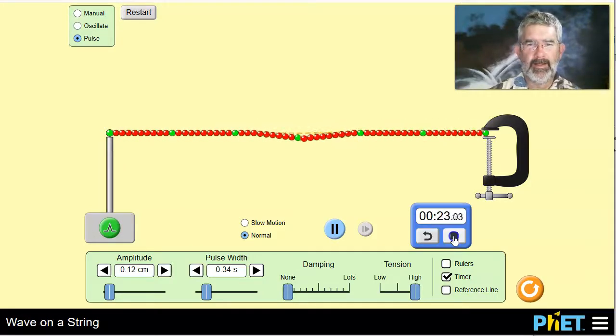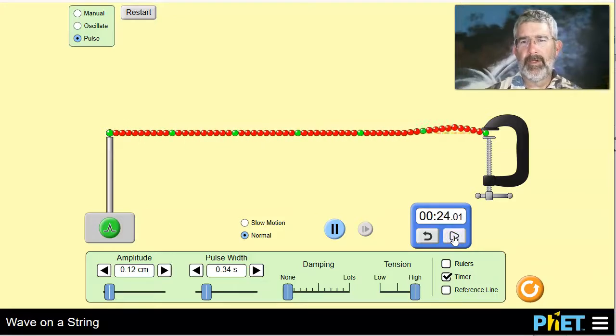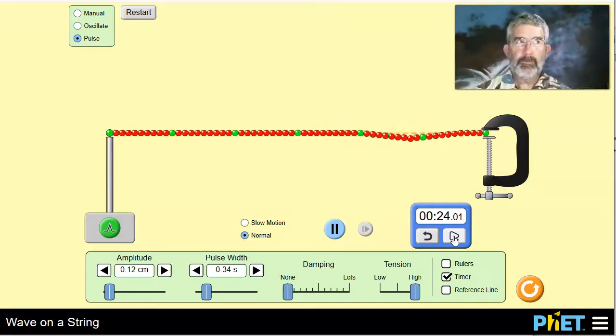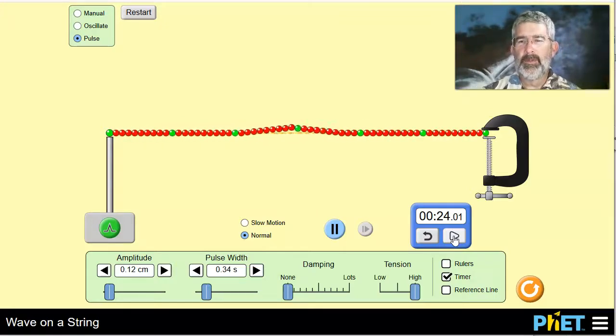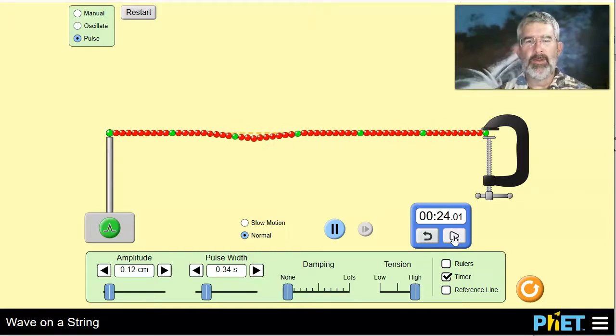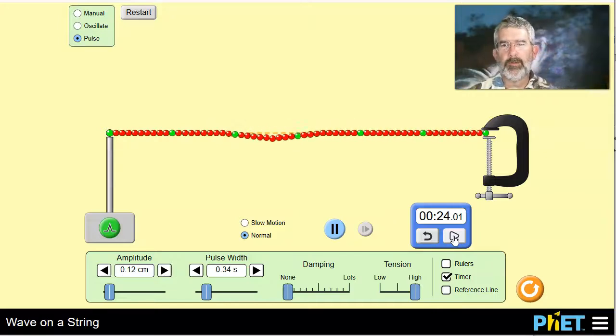9 and 10. Okay. So it's right at about 24 seconds to do 10 vibrations. So divide by 10. That would be 1 time back and forth is 2.4 seconds. So 1 cycle is 2.4 seconds.